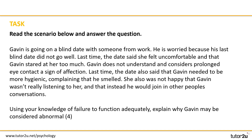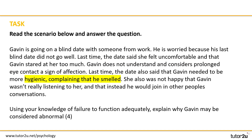Let's see what you spotted. The scenario said she felt uncomfortable and that Gavin stared at her too much — he doesn't understand and considers prolonged eye contact a sign of affection. There are also suggestions of a problem with hygiene, and that he would join in other people's conversations, which is clearly inappropriate. For your answer, make sure you've highlighted some of those points, shown clear engagement with Gavin's story, and made your links to the definition.